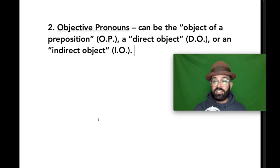And so objective pronouns are going to go into all of the spots that have the word object in them. So the object of a preposition, the object that's in a prepositional phrase, or the direct object, the thing that receives the action of a transitive verb,